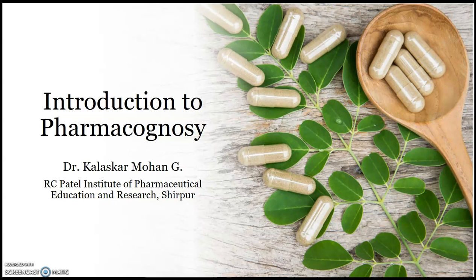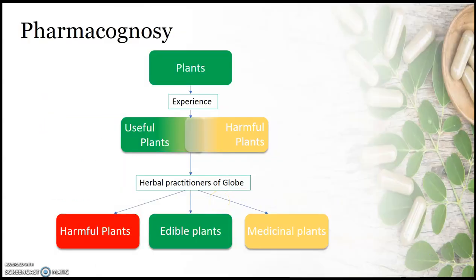As we know, there are basically four subjects in pharmacy: pharmaceutics, pharmaceutical chemistry, pharmacology, and pharmacognosy. Pharmacognosy can be considered as one of the oldest branches in pharmacy.